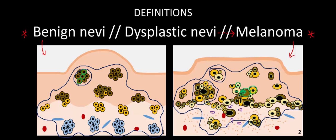At this point, you might be wondering where dysplastic nevi fit on this histological spectrum from benign nevi to melanoma. Dysplastic nevi are somewhere in between the histological features discussed for benign nevi and melanoma. That is to say, when comparing these lesions on those three features — the overall architecture, the cellular irregularity, and the degree of stromal response — dysplastic nevi have irregularities somewhere in between that of a benign mole and a malignant melanoma.